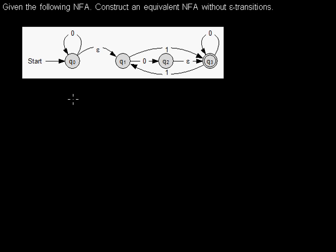Hello. I'd like to show you how to remove the epsilon transitions from a non-deterministic finite-state automaton. Epsilon transitions mean that you don't need to read any input symbols. For example, if you are in Q0, you don't need to read any input symbols and you can just take the epsilon transition to Q1.